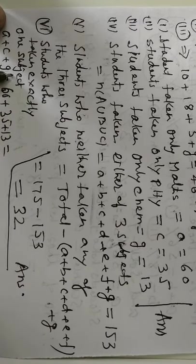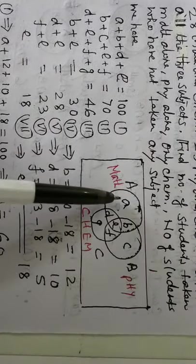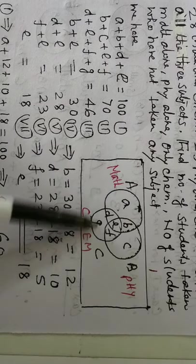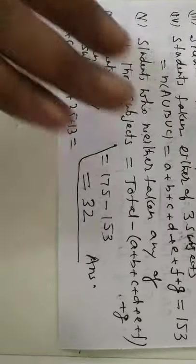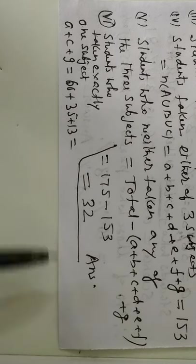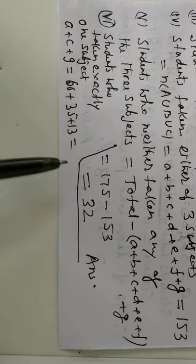Students taken exactly one subject. See the figure. Exactly one subject. Means A, C, G. So, this is A plus C plus G. And whatever you will get. That will be the answer.